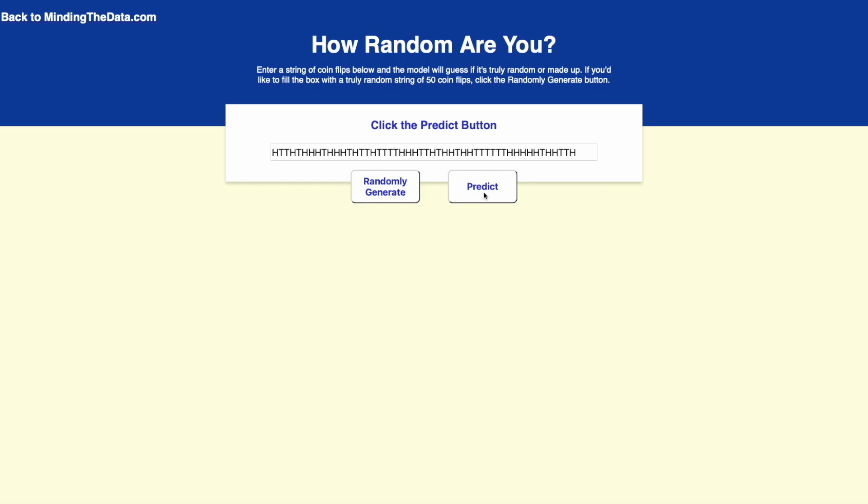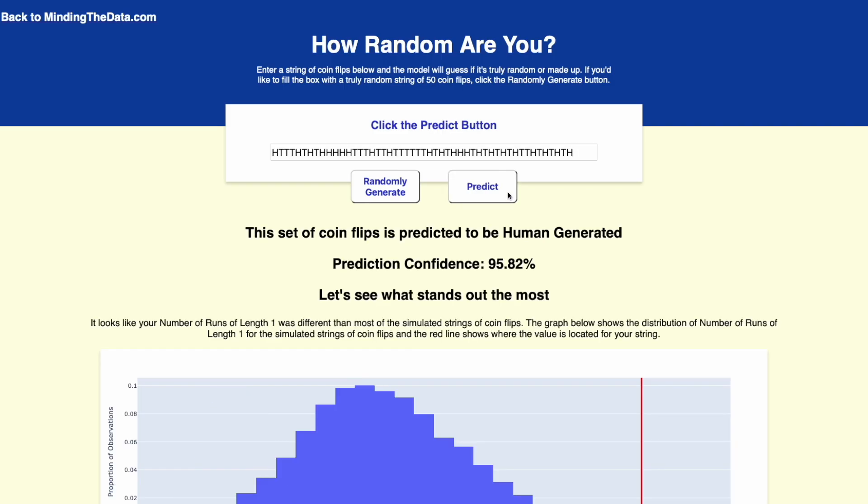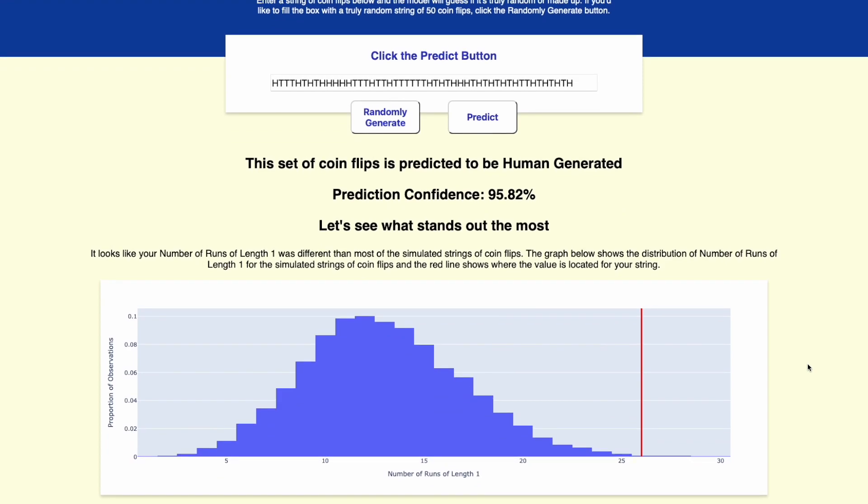Let's first check a randomly generated sequence. We can see here that the model correctly identifies that it was computer generated. Now let's try a string that I came up with myself. The model correctly identifies that it was human generated, and at the bottom here, it will even show me where my sequence differed the most from truly random sequences. In this case, the number of runs of length 1 was way higher than what we should have seen in a truly random sequence. Now keep in mind that this model isn't perfect, but it should still get around 80% of its guesses correct, and hopefully you've learned about some of the key metrics that the model uses, so you should have even better chances of beating this model.